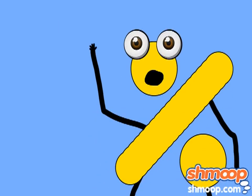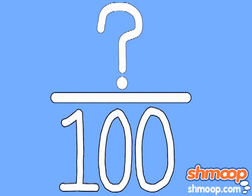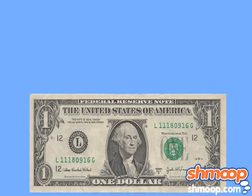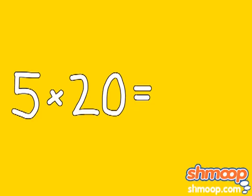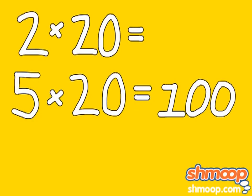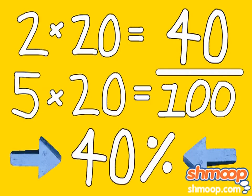Or we could turn it into a percentage, by calculating how many detentions your friend is on pace for over the course of 100 days. Remember, percent really means per hundred. Five times twenty equals one hundred, so we also multiply two times twenty, which equals forty. Now we have forty over one hundred, or forty percent.